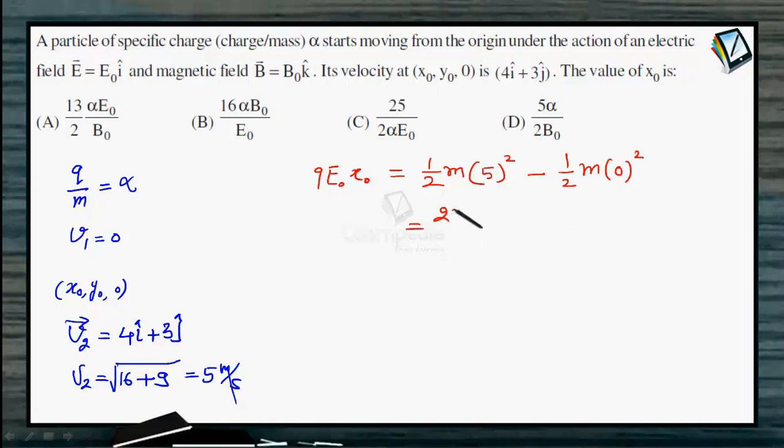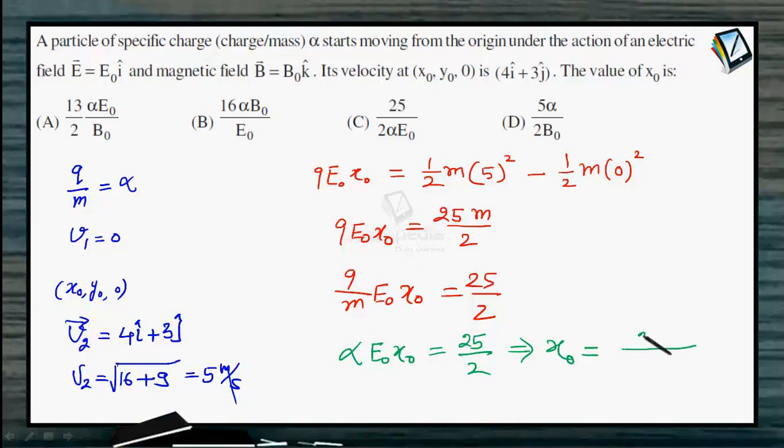It becomes 25 m divided by 2. Here it is q E naught x naught. So q by m E naught x naught is 25 by 2. In place of q by m we can write alpha into E naught into x naught equals 25 divided by 2. So what we have got is x naught equal to 25 divided by 2 alpha E naught. So which option is correct? Obviously option C is the correct option.